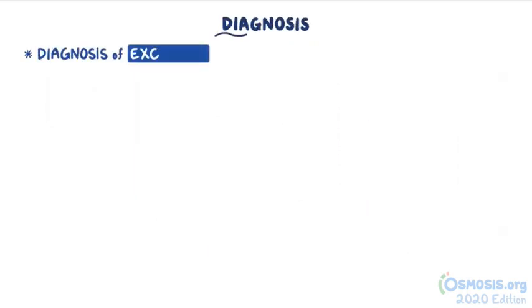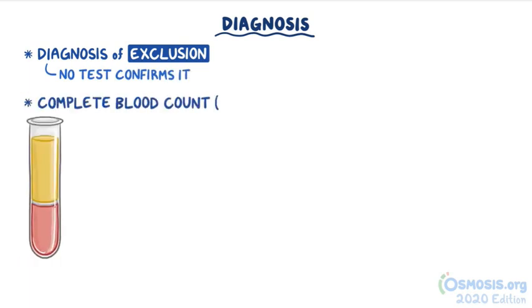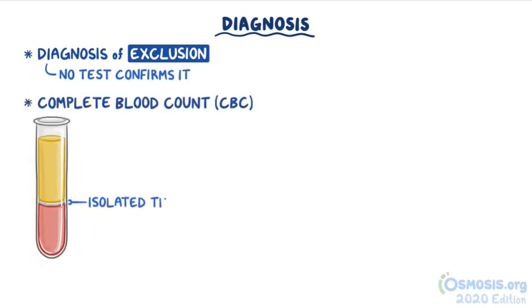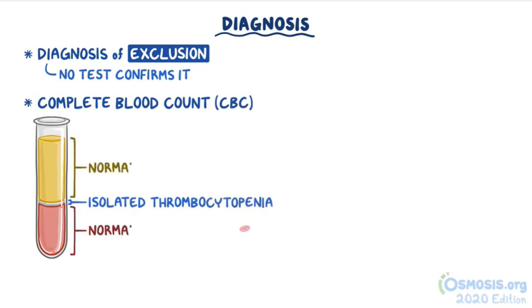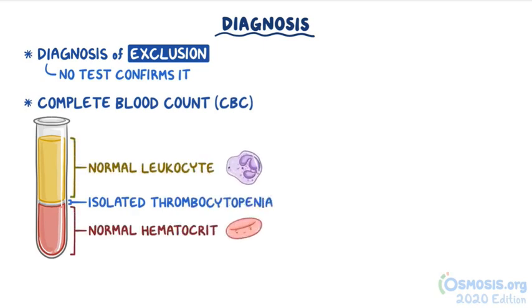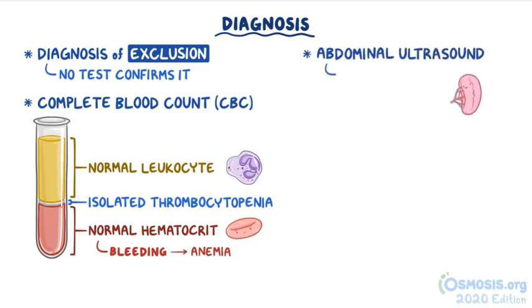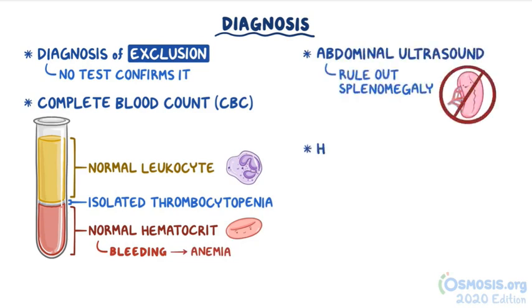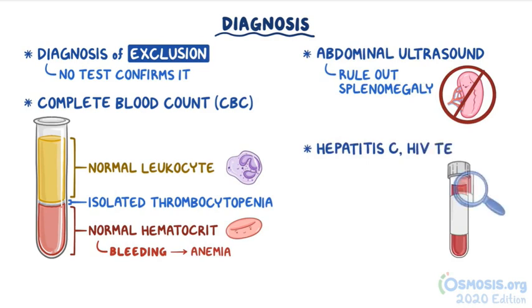In severe cases of ITP, when platelet levels get very low, there may be frequent mucosal bleeding, which most commonly presents as epistaxis, meaning nosebleeds. ITP is a diagnosis of exclusion, so there is no specific test that confirms the diagnosis. The CBC usually shows isolated thrombocytopenia with a normal hematocrit and leukocyte count. An abdominal ultrasound is often done to rule out splenomegaly, and hepatitis C virus and HIV testing are done to rule out secondary ITP.